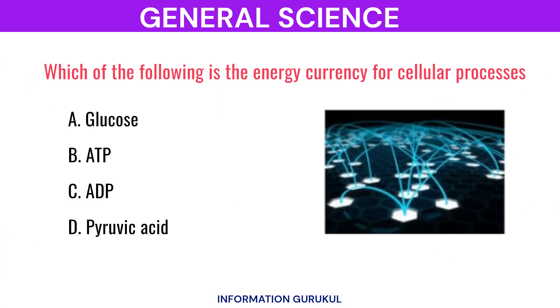Which of the following is the energy currency for cellular processes? ATP — adenosine triphosphate.